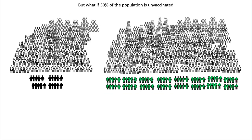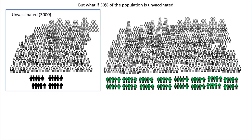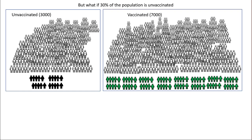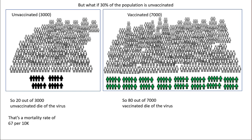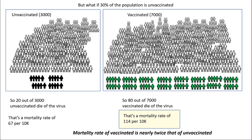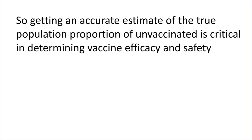But what if 30% of the population is unvaccinated? In that case, there are 3,000 unvaccinated and 7,000 vaccinated. So 20 out of 3,000 unvaccinated die: a mortality rate of 67 per 10K. And 80 out of 7,000 vaccinated die: a mortality rate of 114 per 10K. The mortality rate of the vaccinated is nearly twice that of the unvaccinated under this assumption. So getting an accurate estimate of the true population proportion of unvaccinated is critical in determining vaccine efficacy and safety.